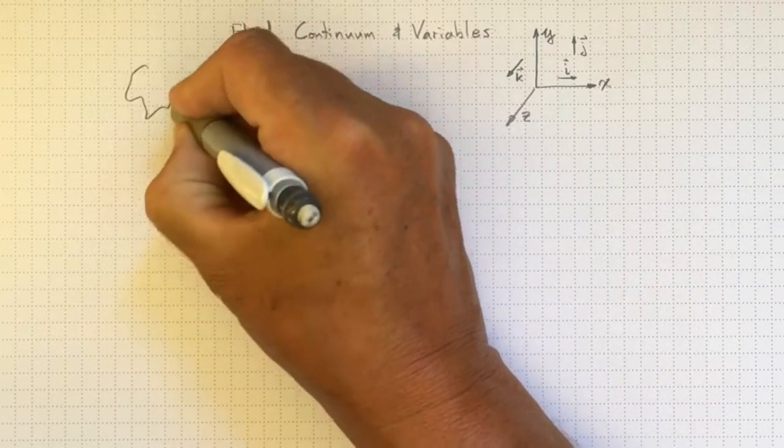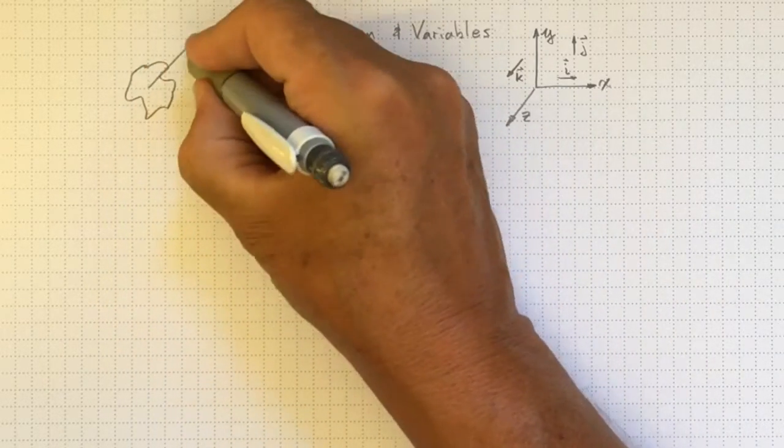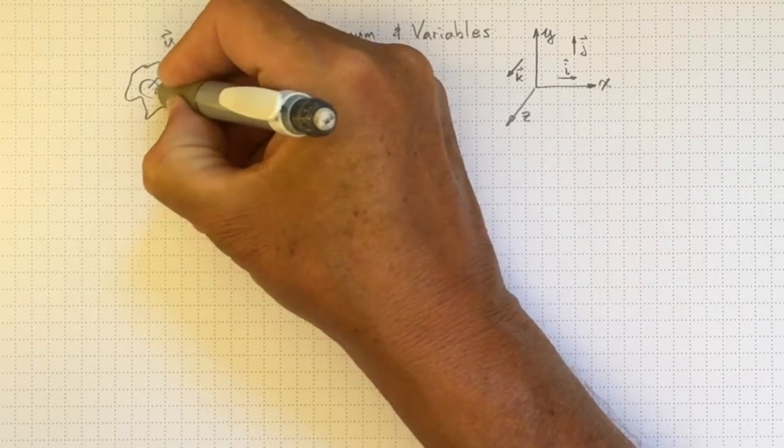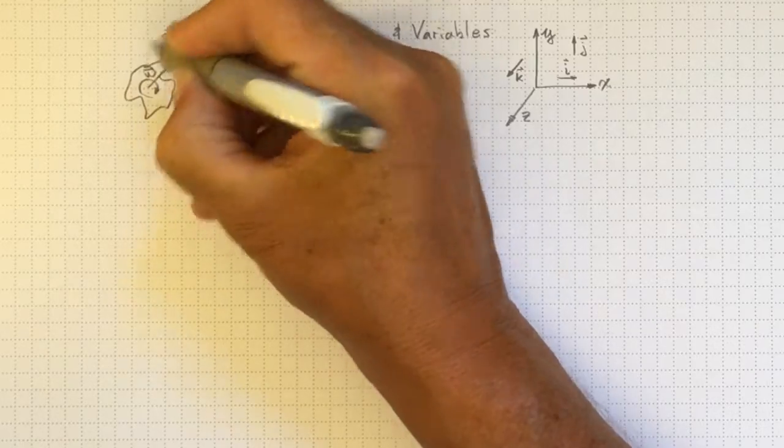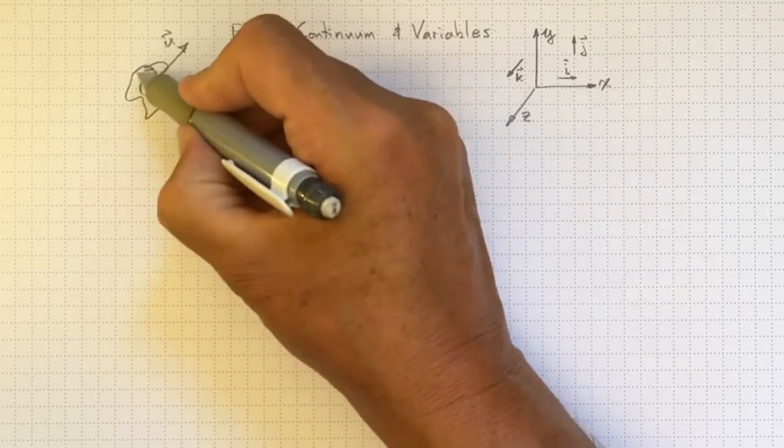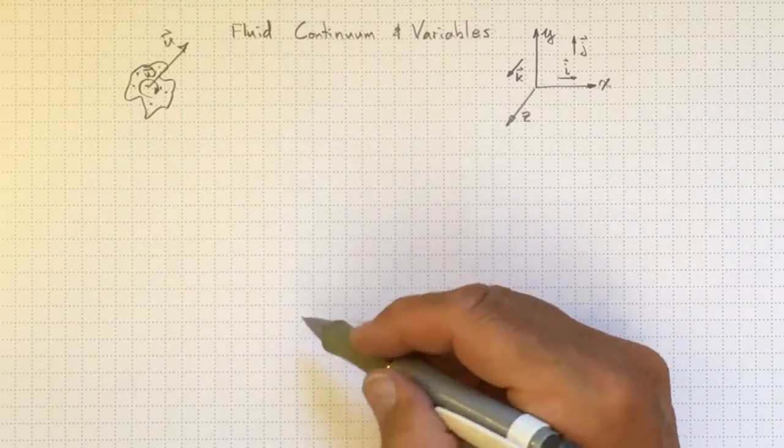So for a solid, some chunk of stuff over here, a single velocity vector and a single rotation vector are enough to describe its motion, because all of the parts move in harmony in a rigid body.